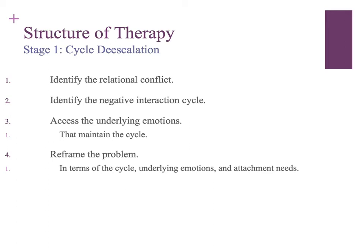The first stage of EFT is similar to structural, strategic, and Bowen. First, you need to identify the relational conflict — what is the problem according to each partner? Then you identify the negative interactional cycle: what are the behaviors and the pattern of interaction that are maintaining these problems? These first two steps are not very different from other models of couples therapy.